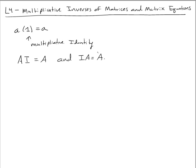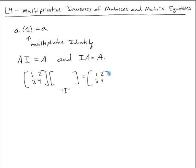Let's look at a quick example with the matrix [1, 2, 3, 4]. We want to find what the multiplicative identity matrix I is, and we hope to get the original matrix [1, 2, 3, 4] back. For a two-by-two square matrix, the identity matrix has ones on the diagonals and zeros everywhere else.